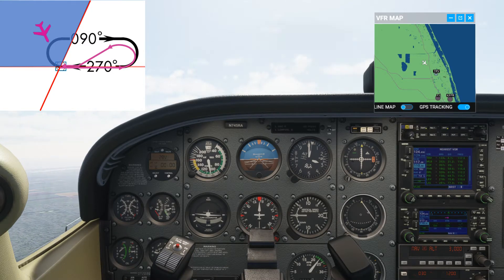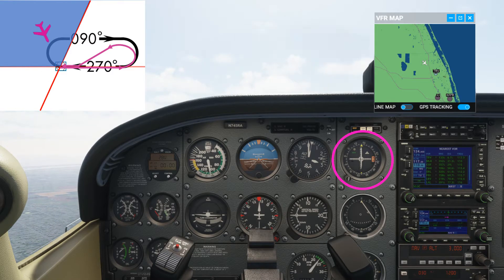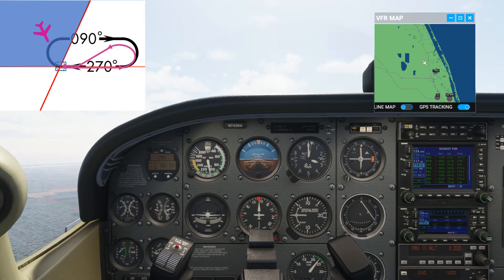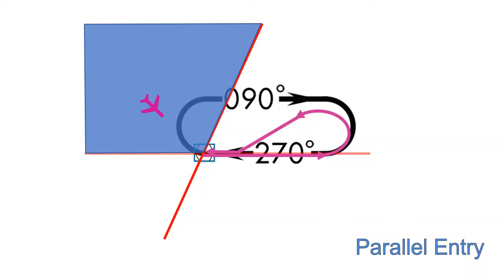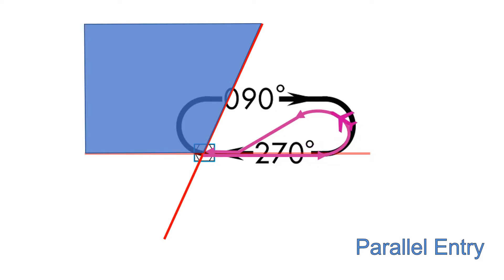Now we are established on the 140 track inbound to the VOR, with a heading of 140 and still zero wind. The heading is 140, which places the aircraft in the parallel entry sector. Once over the VOR, the aircraft must be established onto a track opposite to the inbound leg of the hold. Fly this track for one minute, adjusted by one second per knot of headwind or tailwind component. Once the time is up, for a standard hold, a left turn is made inside the hold to establish onto the inbound track to the VOR, and then the normal hold procedures apply.